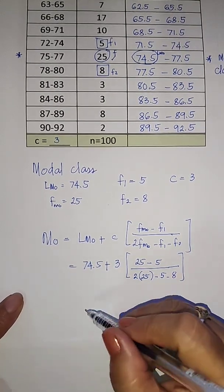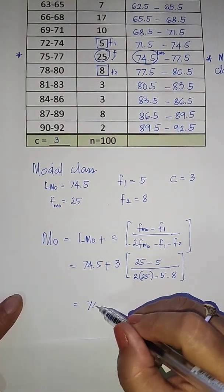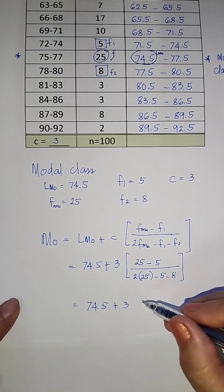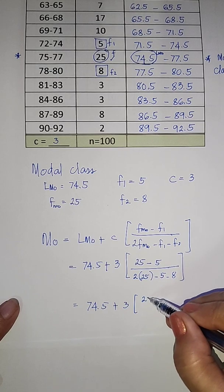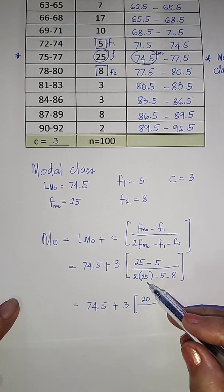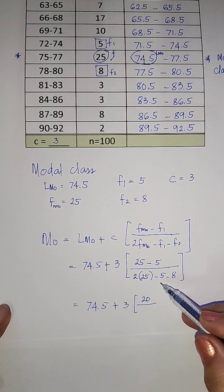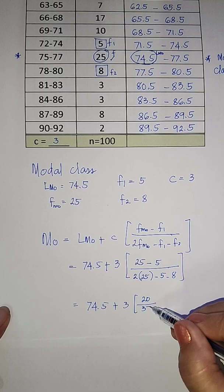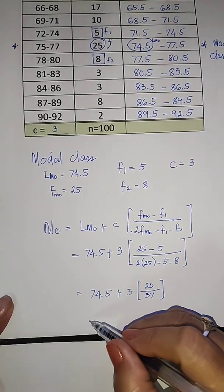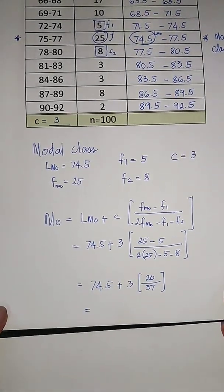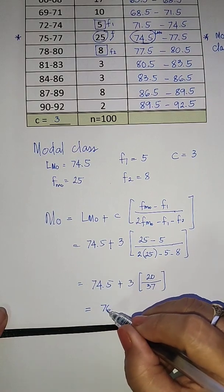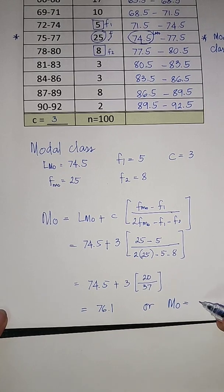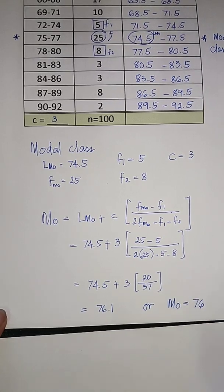Using our calculator, we now have 74.5 plus 3 times, so here we have 20 divided by 2 times 25 is 50, 50 minus 5 minus 8 is equal to 37. Now, this will be equal to 76.1, or our mode is equal to 76.